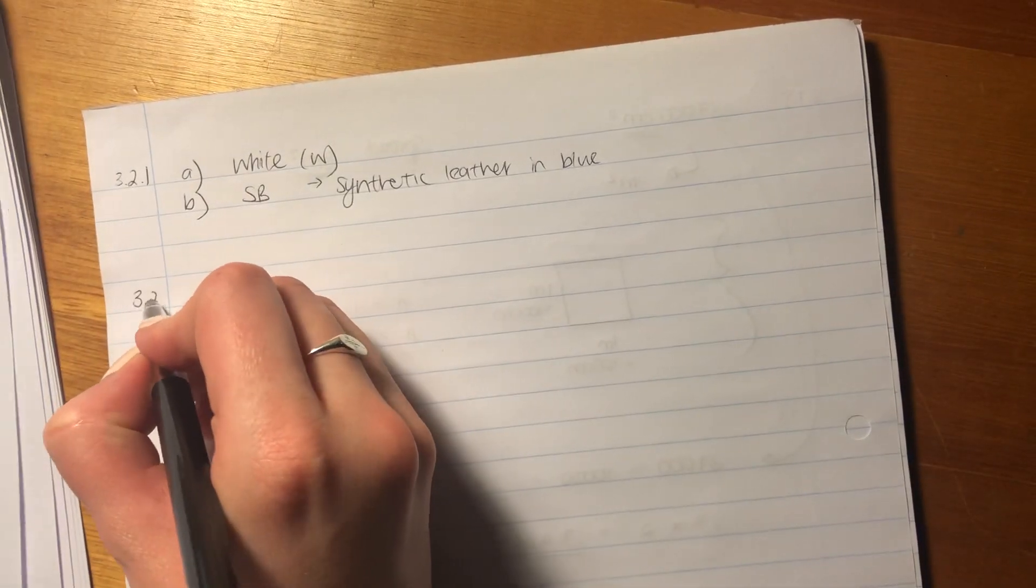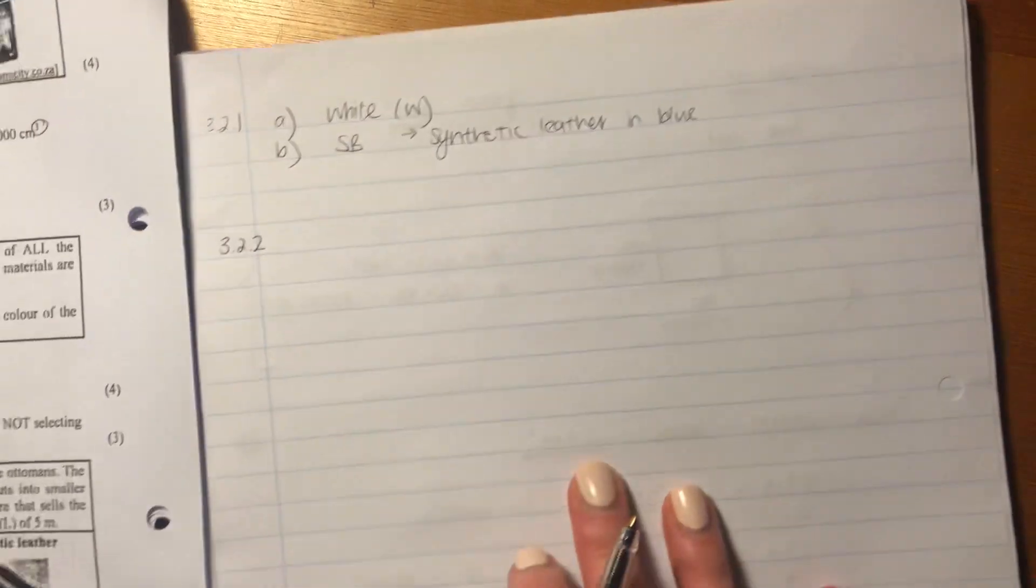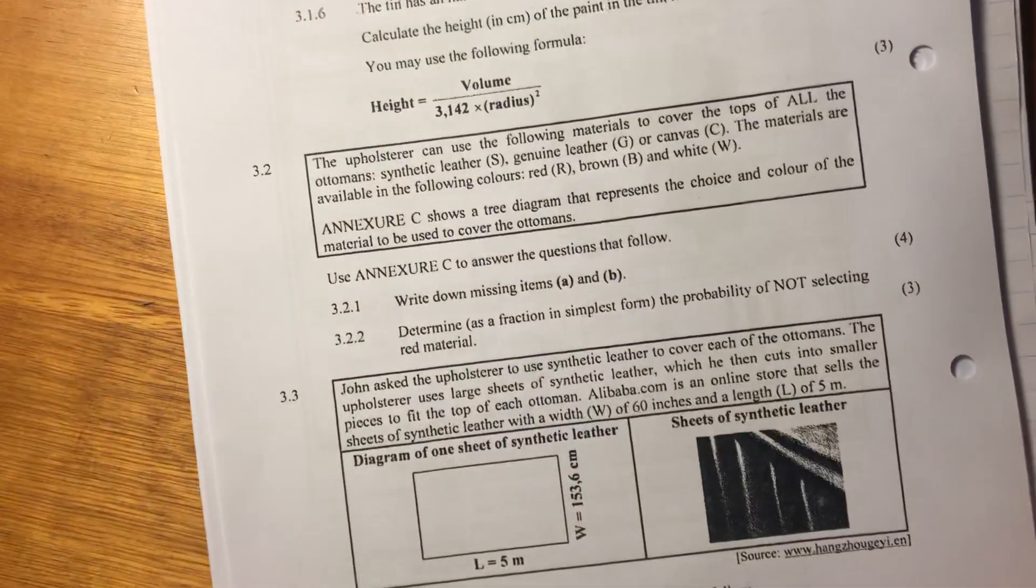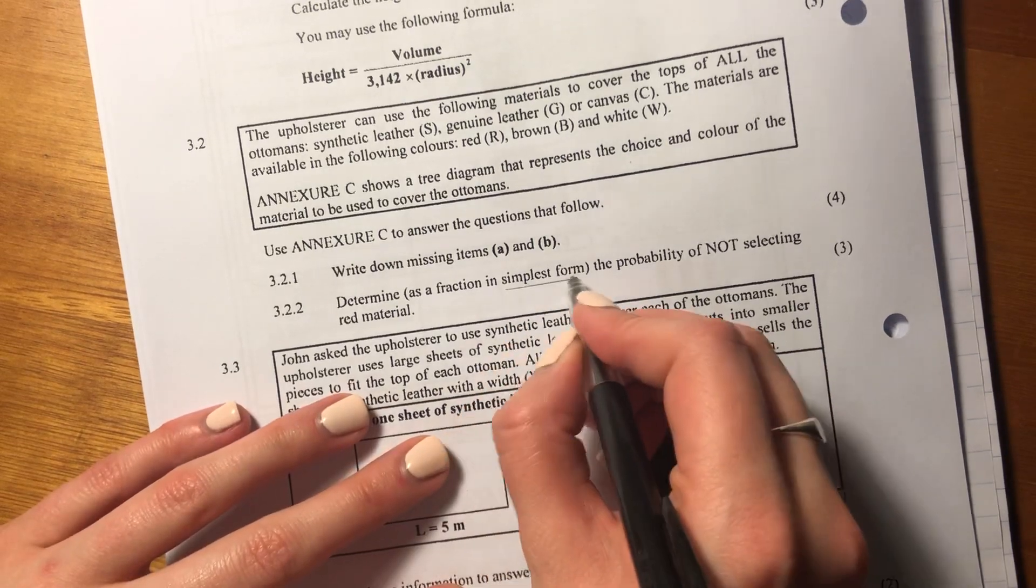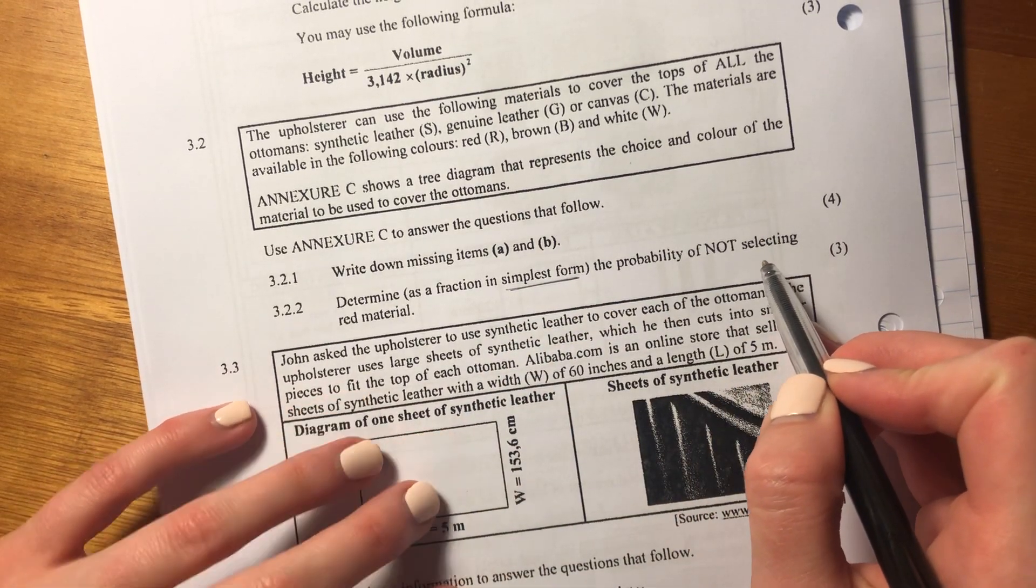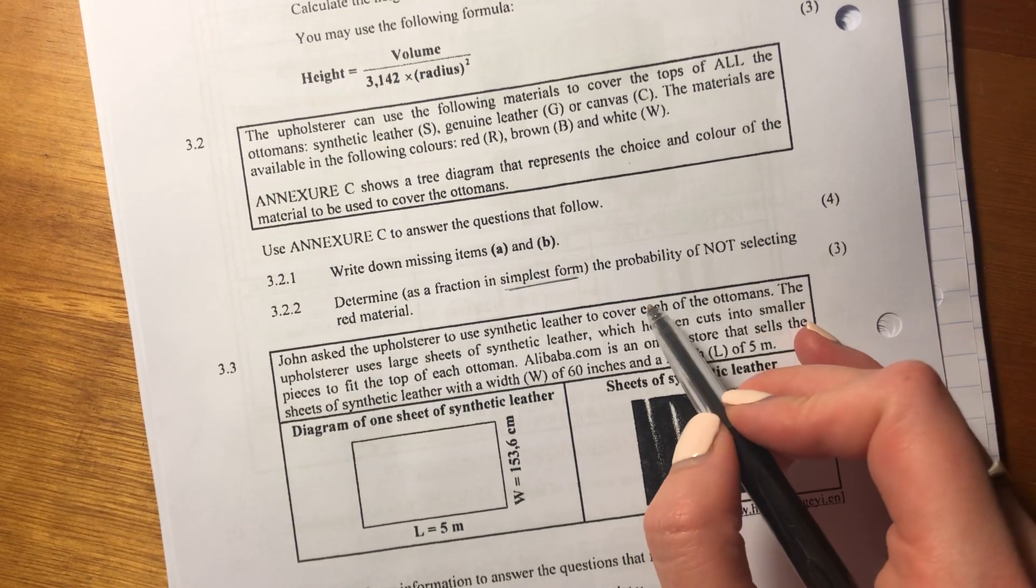Let's now go on to the next question. It says determine as a fraction in simplest form, that's important, the probability of not selecting red material.